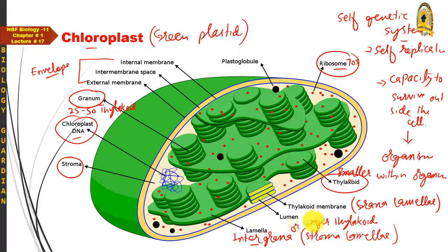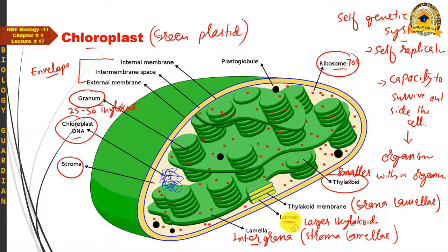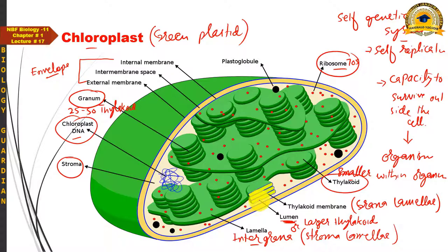The pigments are distributed in the thylakoid membranes — the grana lamellae. The space inside the thylakoid is called the lumen. The lumen functions analogously to the inter-membrane space in mitochondria: in photosynthesis, the hydrogen ion gradient is established in the lumen during the electron transport chain. So lumen and inter-membrane space are functionally analogous but structurally different.